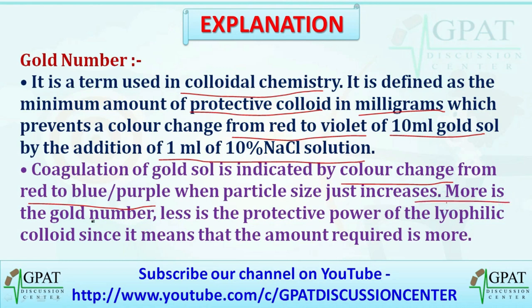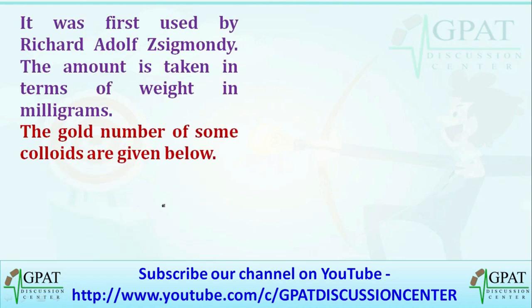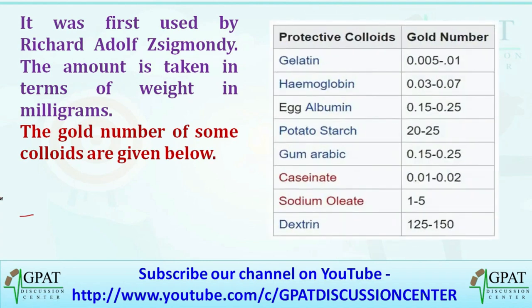Coagulation of gold solution is indicated by a color change from red to blue or purple when particle size increases. More is the gold number, less is the protective power of the lyophilic colloid, meaning more amount is required. It was first described by Richard Edolphe Zsigmondy. The amount is taken in milligrams. Gold numbers of some colloids — gelatin, hemoglobin, egg albumin, potato starch, gum arabic, sucrose, sodium oleate, and dextrin — are given in the table.